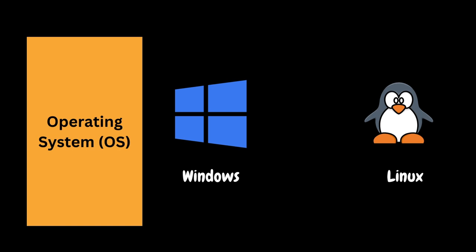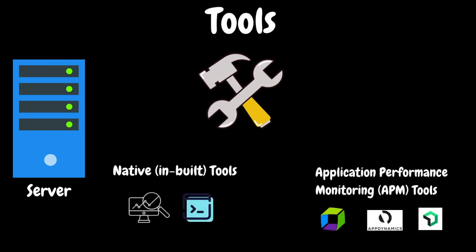There are many operating systems available in the market. In companies, Windows and Linux operating systems are commonly used. Our job is not just to push load on the server — it is also our responsibility to monitor the server behavior, so that if there are any issues, the application team can fix them and ensure there is no impact on customers. We have different tools available in the market to monitor the server. Some monitoring tools are built into the operating system, while others are provided by specific organizations and may require purchasing licenses.